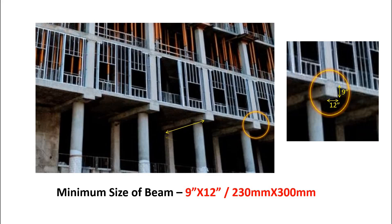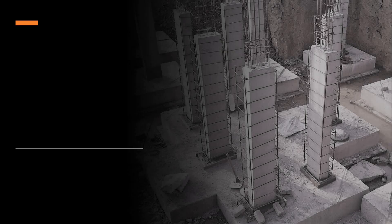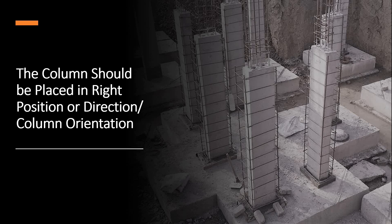For ground floor with a 9 inch by 9 inch column, a 9 inch by 12 inch beam should be used. For G plus 1 storey, a 9 inch by 12 inch column and also a 9 inch by 12 inch beam should be used. For G plus 2 storey, a 12 inch by 12 inch column and the minimum beam size of 9 inch by 12 inch should be used. The column should be placed and oriented in the right position so that the building becomes economical, the cost of construction decreases, and the structure becomes safe. These are the conditions to be followed when using minimum column sizes with maximum spacing in residential building construction.